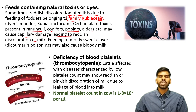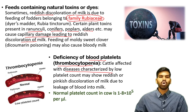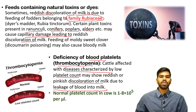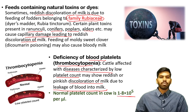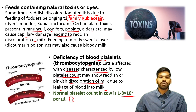The next cause is deficiency of blood platelets — Thrombocytopenia. Thrombocytes are nothing but blood platelets. Cattle affected with diseases characterized by low platelet count may show reddish or pinkish discoloration of milk due to leakage of blood into milk. One important point: the normal platelet count in a cow is 1 to 8 × 10⁵ platelets per microlitre of blood.